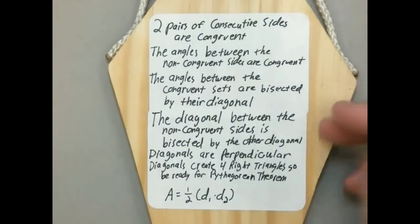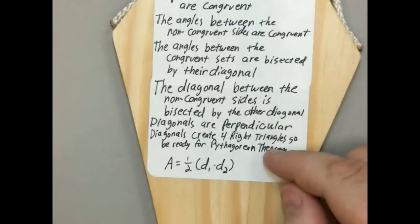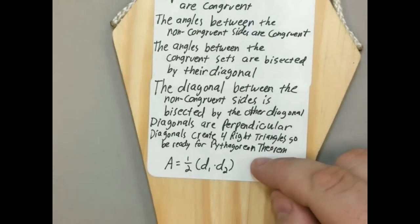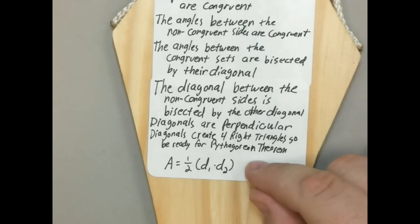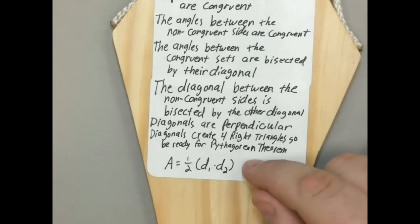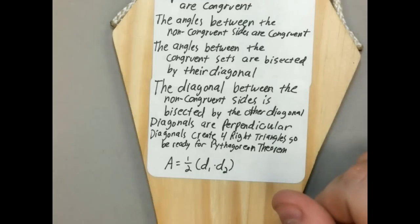The area formula for the kite is: area equals one half times the two diagonals multiplied by each other. You see this formula anytime you have perpendicular diagonals. However, this is the only formula for a kite — when you see it in the rhombus and square later on, the parallelogram formula is also available there, but this is the only option available for a kite. So you have to multiply the two diagonals and take half of that.